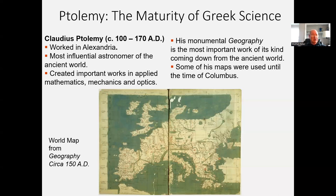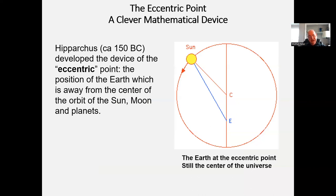So we now look at Ptolemy's system. Ptolemy is certainly the epitome of Greek astronomy, using all the mathematics that came before him. He worked at Alexandria from about 100 to 170 AD. He was a Roman citizen and a great geographer besides an astronomer and mathematician. He made a world map — you can Google Ptolemy's world map; I think you'll find it very interesting. But we're concerned with his astronomy.